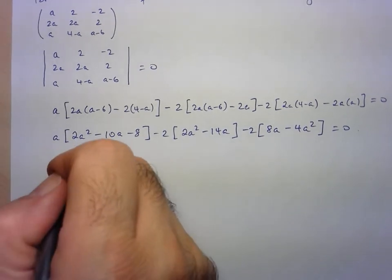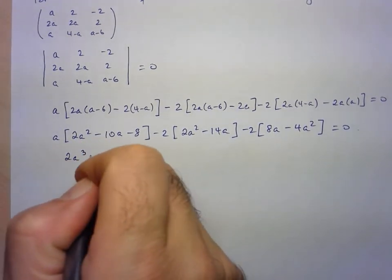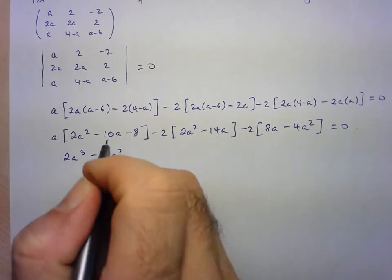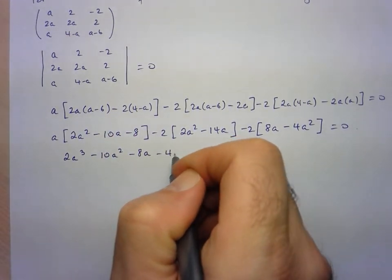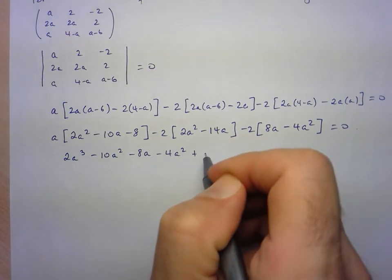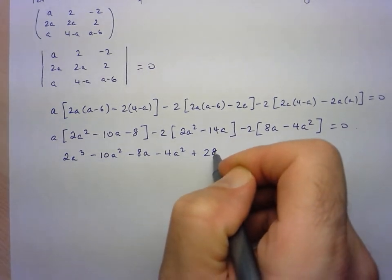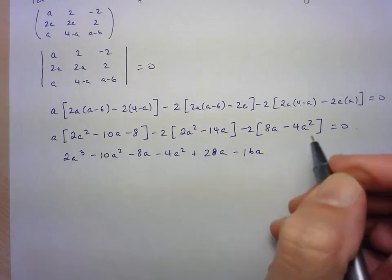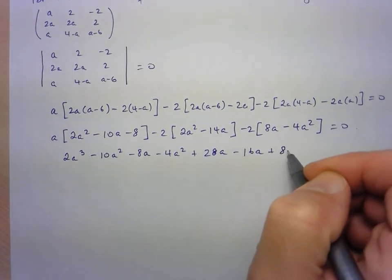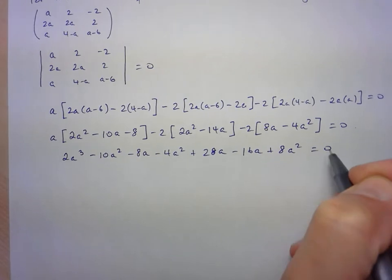So what do we have here? Here we've got 2A cubed minus 10A squared minus 8A. Here we've got minus 4A squared plus 28A. And here we've got minus 16A plus 8A squared.